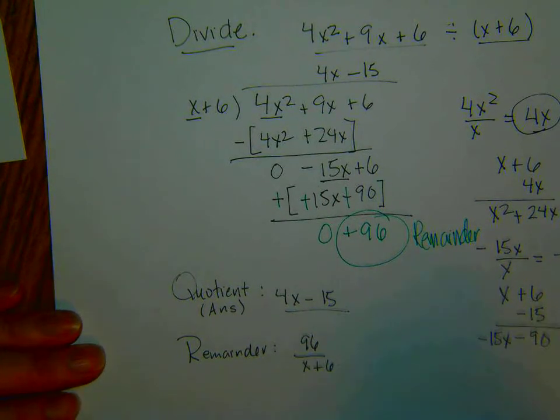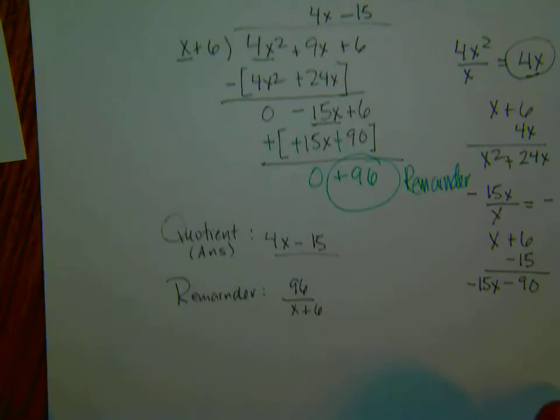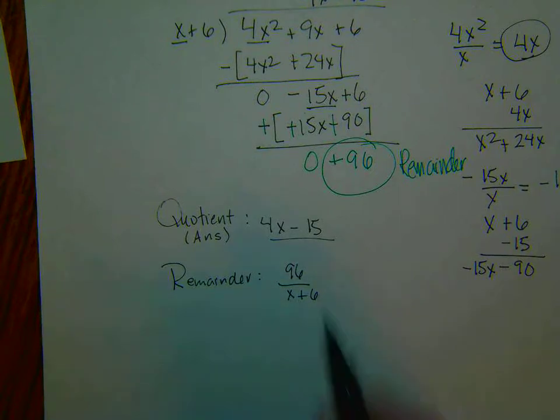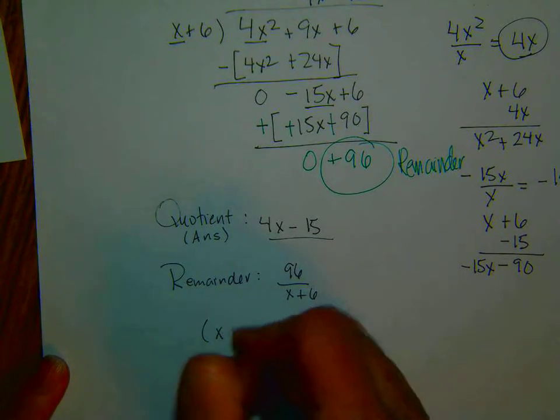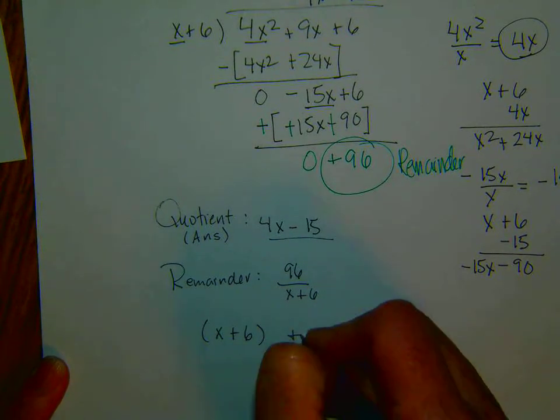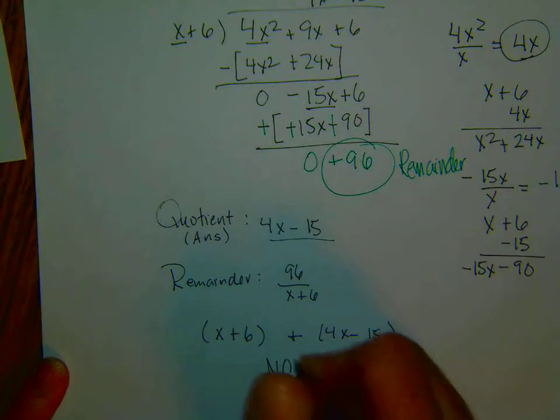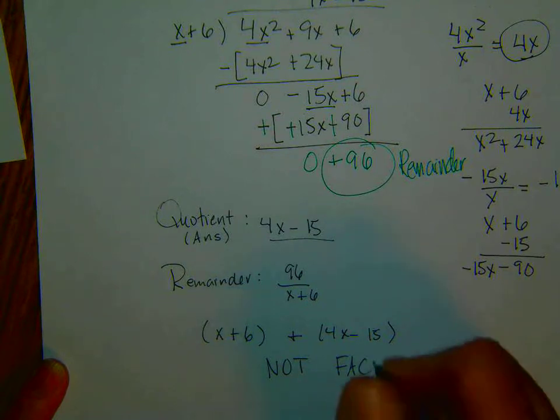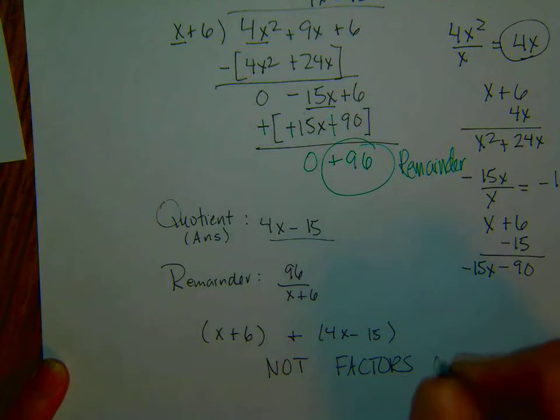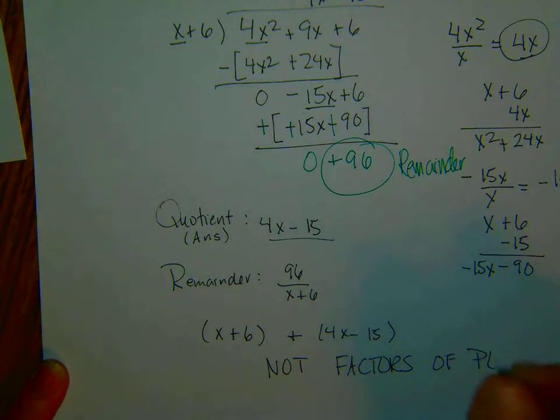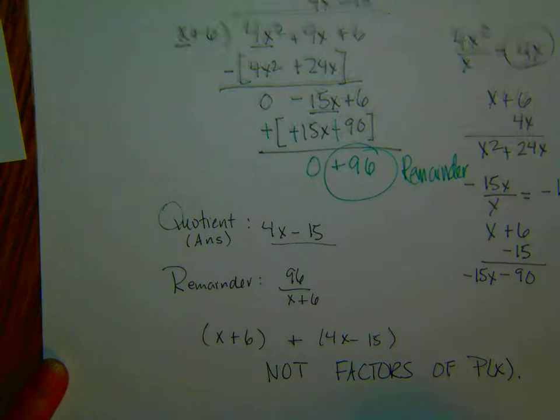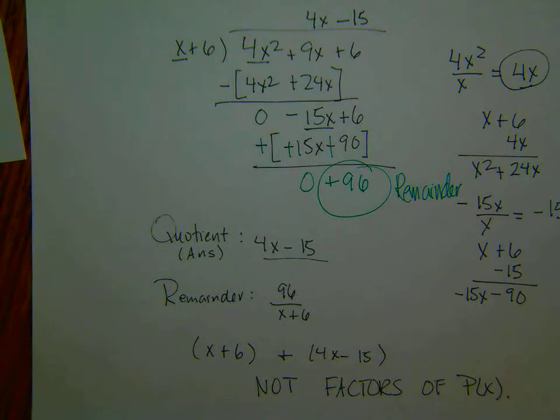Now what does that tell us in terms of long division? That tells us that x plus 6 and 4x minus 15 are not factors of P of x. So that is a refresher of long division.